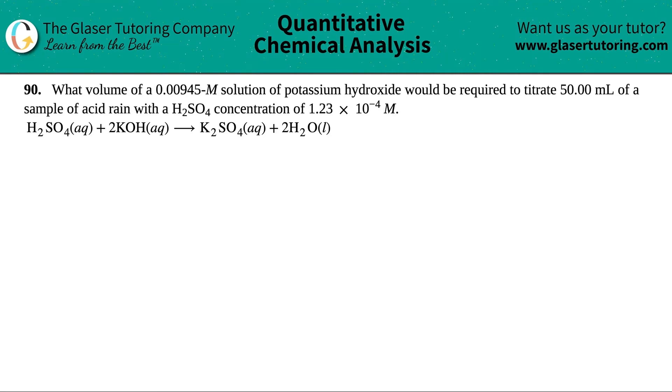Number 90. What volume of a 0.00945 molarity solution of potassium hydroxide would be required to titrate 50 mils of a sample of acid rain with an H2SO4 concentration of 1.23 times 10 to the negative 4 molarity?